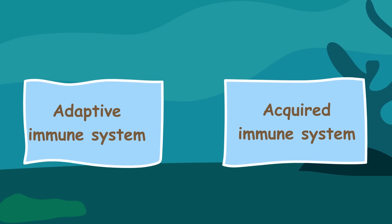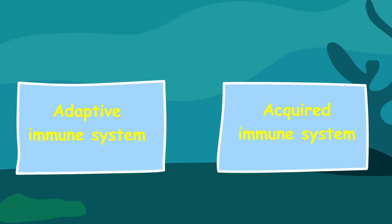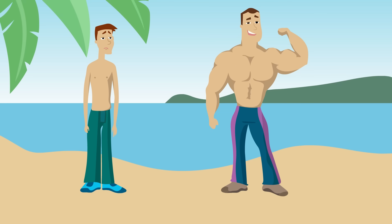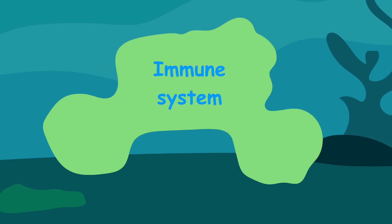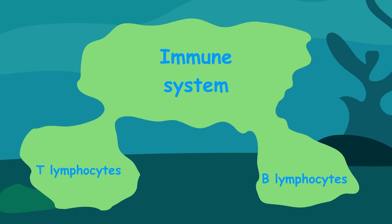Now, there is also the adaptive or acquired immune system. This system is more efficient, as it can differentiate between different types of pathogens. It has two main components, T-lymphocytes and B-lymphocytes.